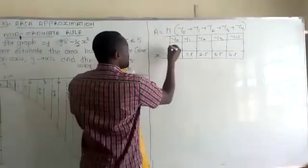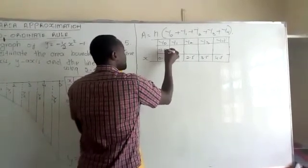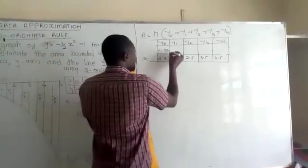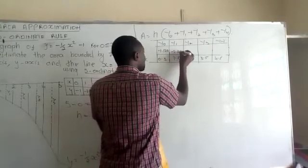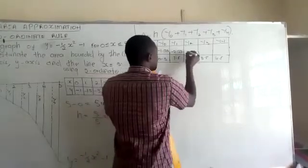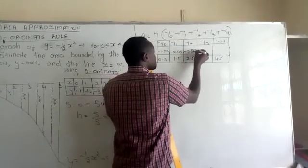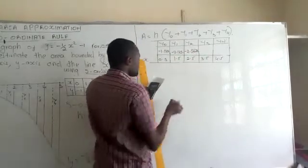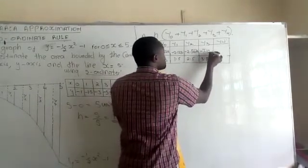This will be negative 1.125. This will be negative 2.125. This is negative 2.5625. This will be negative 7.125.